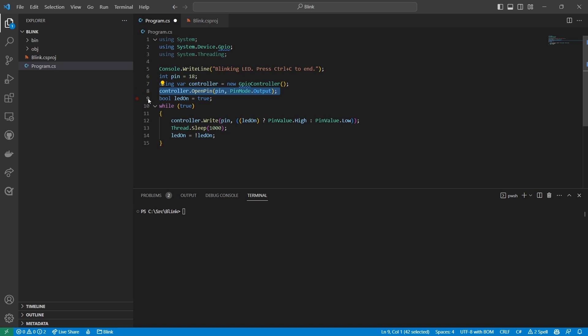Next, I'm calling the controller's OpenPin method to open a connection to pin 18 for output. Then I set a Boolean variable LEDOn to true. This will be used to keep track of the LED state.